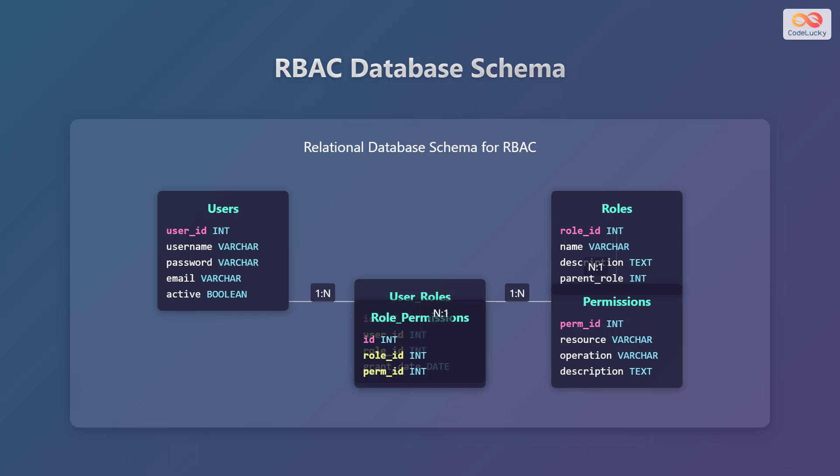The user-roles table links users to roles, recording the user ID, role ID, and grant date. The role-permissions table links roles to permissions, storing the role ID and permission ID. Relations between these tables are one-to-many, ensuring that one user can have multiple roles and one role can have multiple permissions.